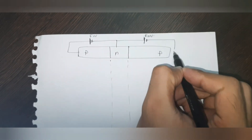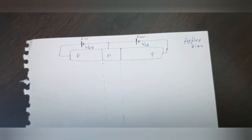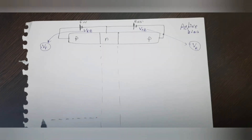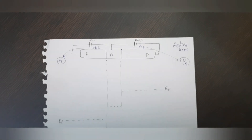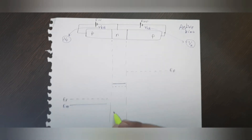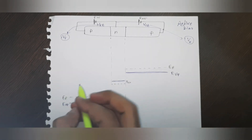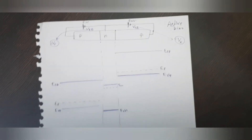We shall first consider the PNP transistor. There are four regions of operation in BJTs depending on the bias applied; here we study the active bias case. In the active region, the emitter-base junction is forward biased and the base-collector junction is reverse biased. For the emitter-base (PN on the left), the N side is connected to the negative terminal, so EFN will go up. For the base-collector (NP on the right), the rightmost P side is connected to the negative terminal, so its Fermi energy level will go up.